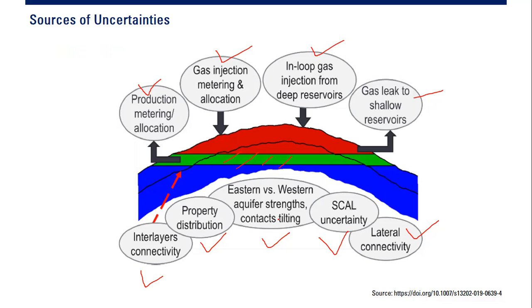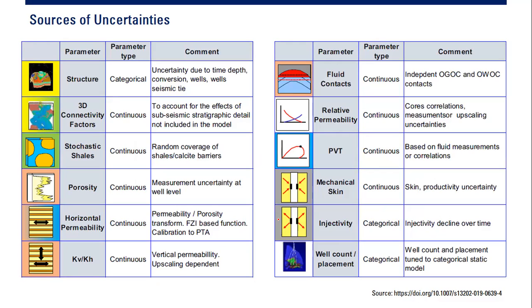These are very challenging issues. Here is a table of the sources of uncertainty. For example: structural uncertainty, categorical comment uncertainty due to time-depth conversion, wells and seismic tie, uncertainty regarding 3D connectivity factor — it's a continuous parameter — to account for the effect of sub-seismic stratigraphic detail not included in the model, stochastic shale, and random coverage of shale calcite barriers.